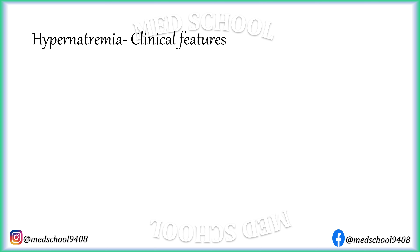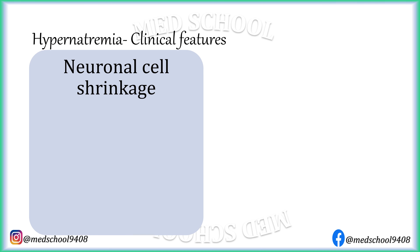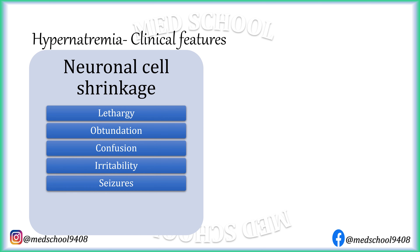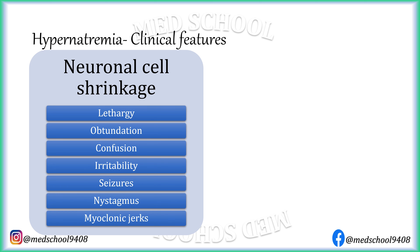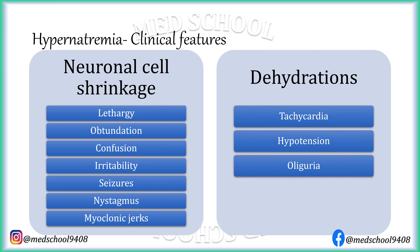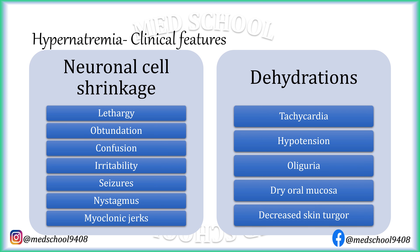Clinical features of hypernatremia can be due to neuronal cell shrinkage, which includes lethargy, obtundation, confusion, irritability, seizures, nystagmus, and myoclonic jerks. Features of dehydration include tachycardia, hypotension, oliguria, dry oral mucosa, and decreased skin turgor.